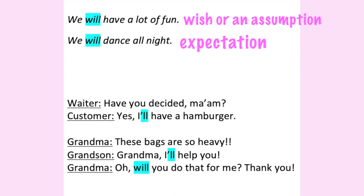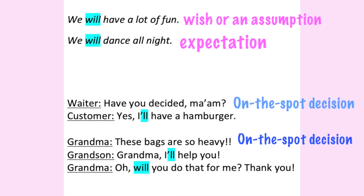You can also use will plus verb one for on-the-spot decisions. It is used to express a decision that we make spontaneously in the present moment. Look at this example between a waiter and a customer. Have you decided, ma'am? Yes, I'll have a burger. So the customer makes the decision at the time of speaking. And the second example between grandma and her grandson: These bags are so heavy. Grandma, I'll help you. Oh, will you do that for me? Thank you. As you see, the boy decides to help her at the time of speaking.